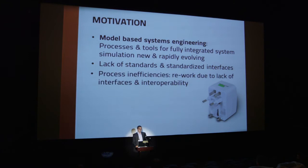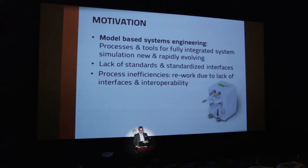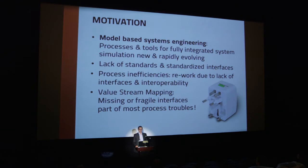So what does that lead to? It really leads to inefficiencies in processes in systems engineering. We have to do rework. A model has been done in one tool, it's needed in another tool, there's no interface. And what do people do? They re-implement the same thing in the other tool. And because there's a lack of time, they do it sloppily or simplified. There is actually a process from manufacturing called value stream mapping — where do things go wrong, where is extra work in processes? And if we look at these processes in systems engineering, missing or fragile interfaces are part of most troubles in getting processes efficient and fast to work.